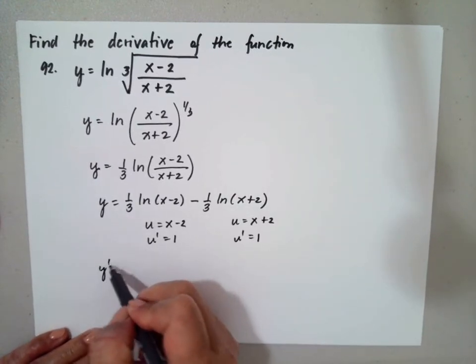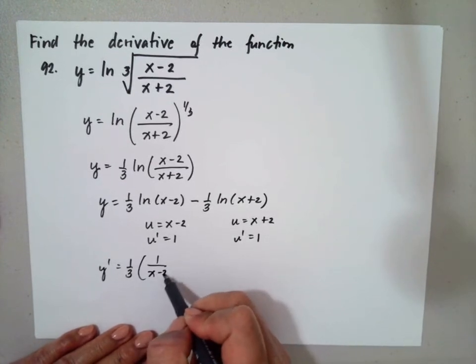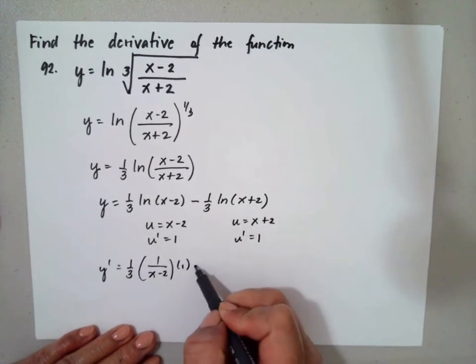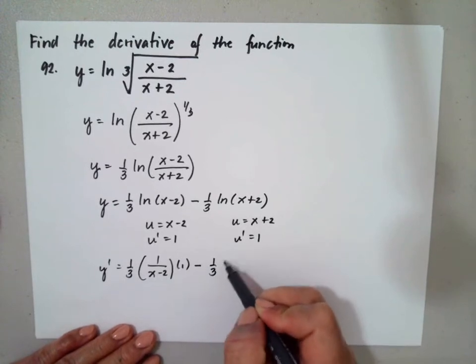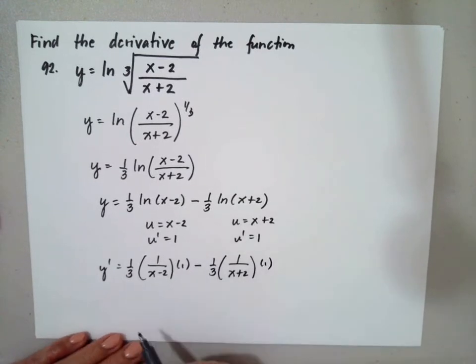The derivative of this will be 1 third times 1 over x minus 2 multiplied by 1 minus 1 third of 1 over x plus 2 multiplied by 1.